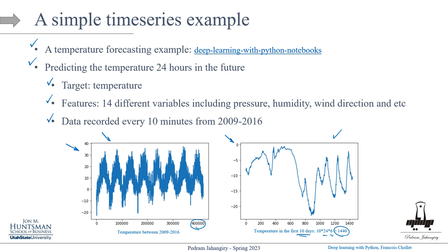So the roadmap is: first look at the naive forecaster benchmark, then try a simple neural network where we flatten the data, then CNN with convolutional layers, and finally come up with a better architecture — namely RNN. The setup is: given the previous five days (120 hours), can we predict the temperature in 24 hours? We collect one sample per hour, so each sequence has length 120.